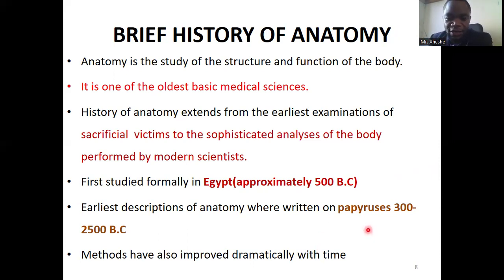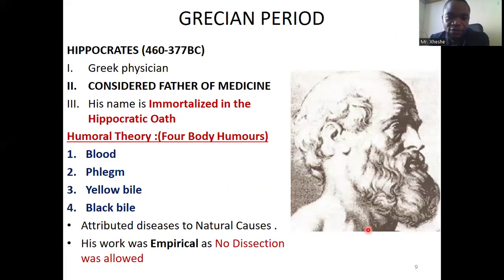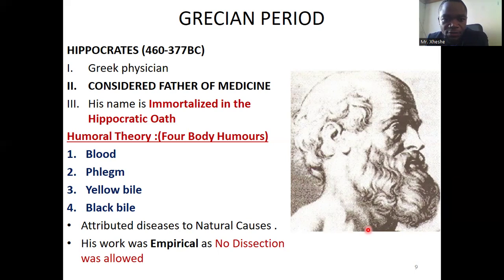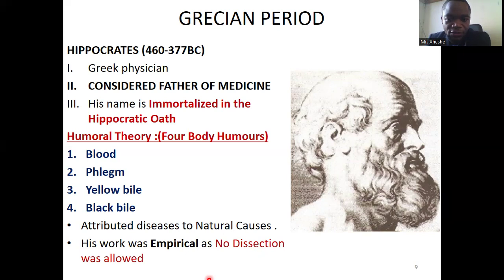With time, the method of studying the human body underwent various changes. Starting with Hippocrates — a Greek physician considered as the father of medicine — there is an oath named after him called the Hippocratic Oath. He was trying to come up with a form of pledge that individuals responsible for looking after human beings should take — more like a promise not to do harm to human beings intentionally.